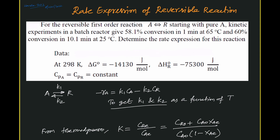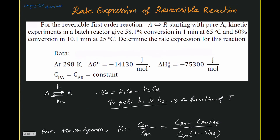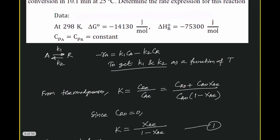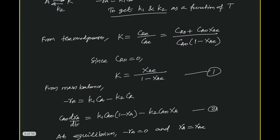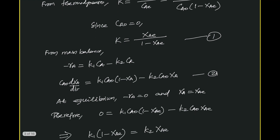From thermodynamics, the equilibrium constant capital K equals the concentration of R at equilibrium divided by the concentration of A at equilibrium — products over reactants. Since we start with pure A, CR-naught is zero, which gives simply K equals XAE divided by (1 minus XAE), where XAE is the equilibrium conversion. So equilibrium conversion and K are now connected.